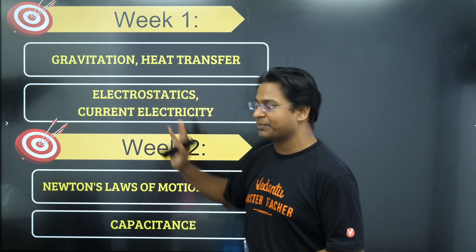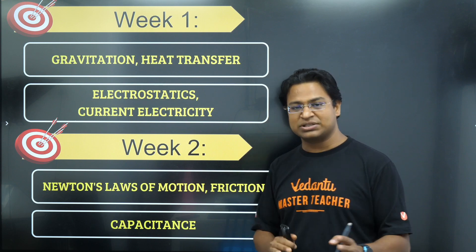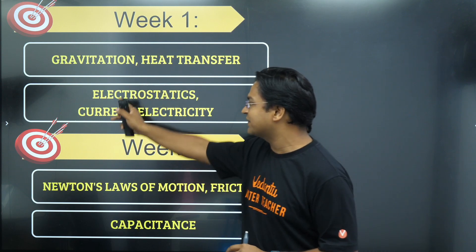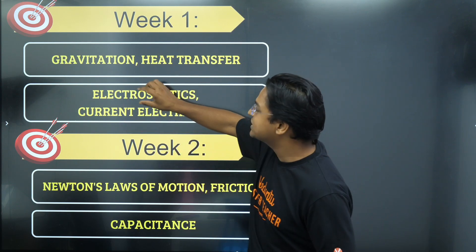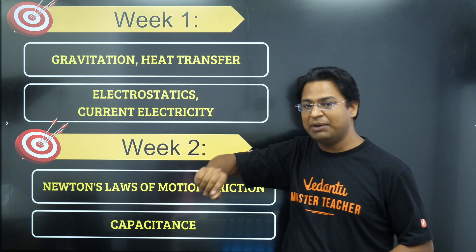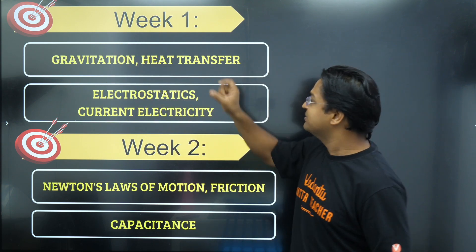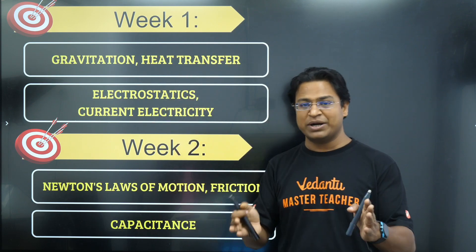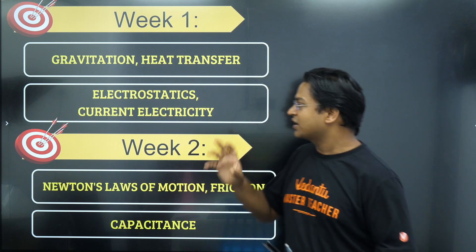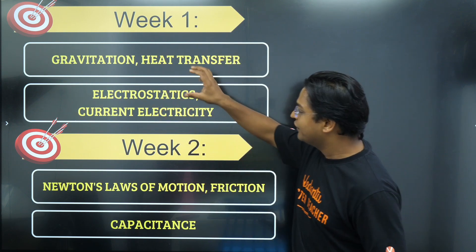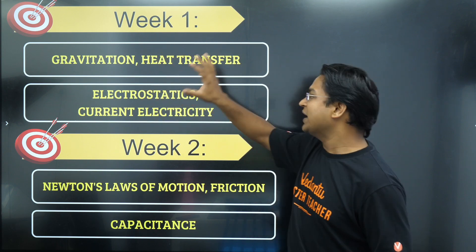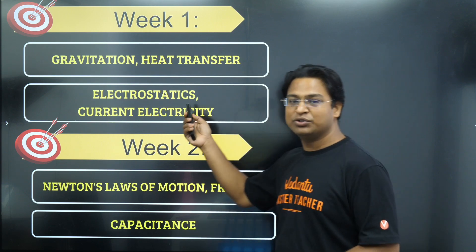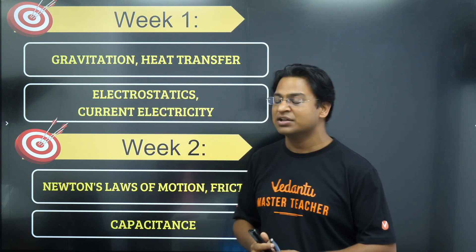Why these topics? These are the first topics of 12th grade and I'm pretty sure many of you have already completed them. Electrostatics is very similar to Gravitation, so revising Gravitation alongside Electrostatics helps. Similarly, Heat Transfer is very similar to Current Electricity — at least the conduction part. Heat Transfer comprises conduction and radiation; the conduction part is quite similar to Current Electricity. Revising these two pairs together helps you remember all four chapters well.